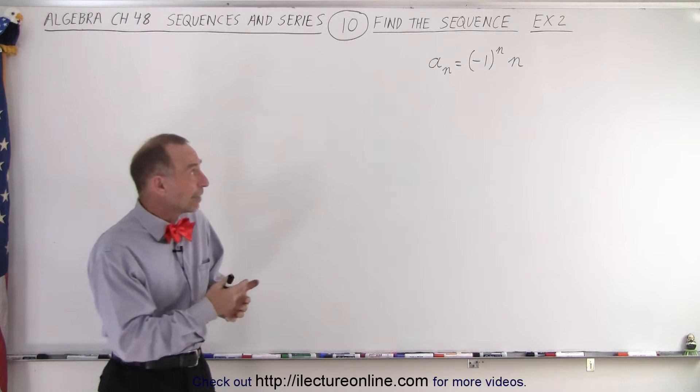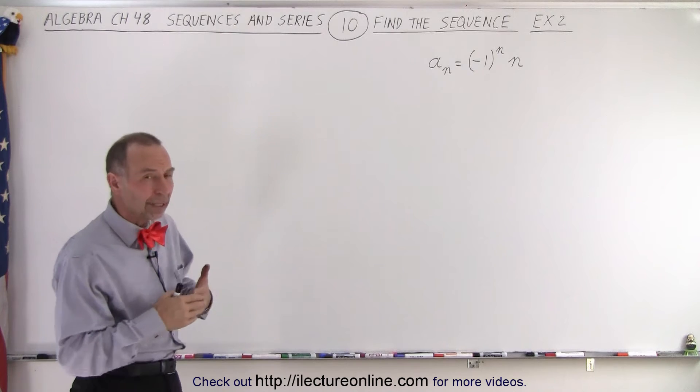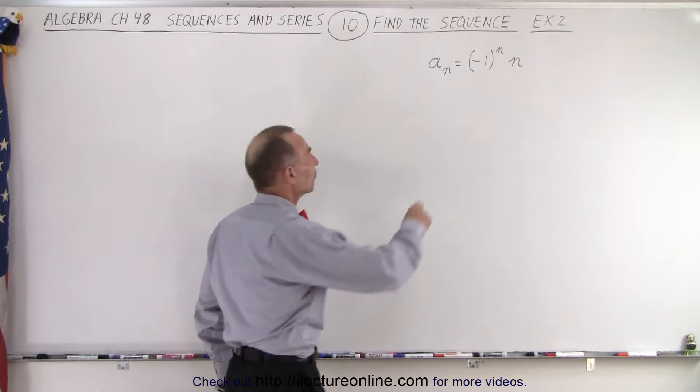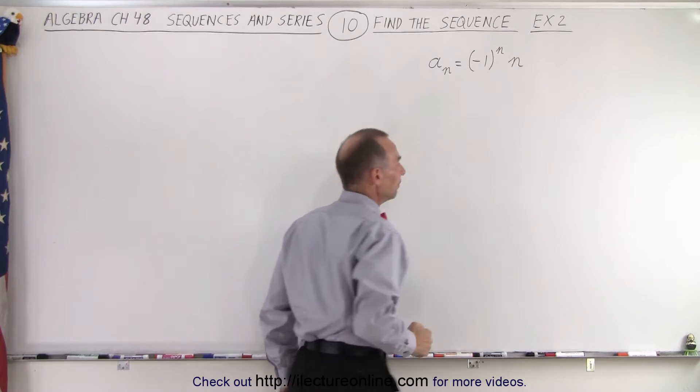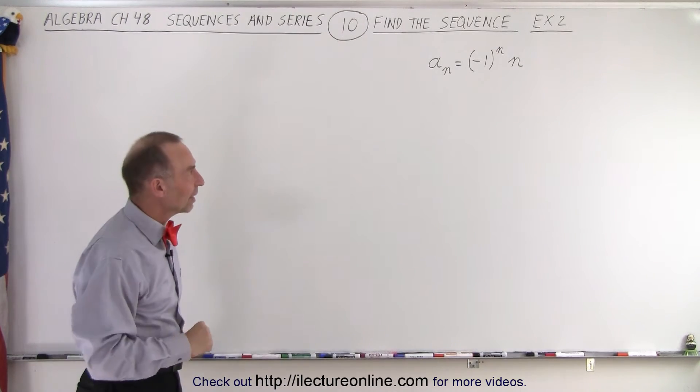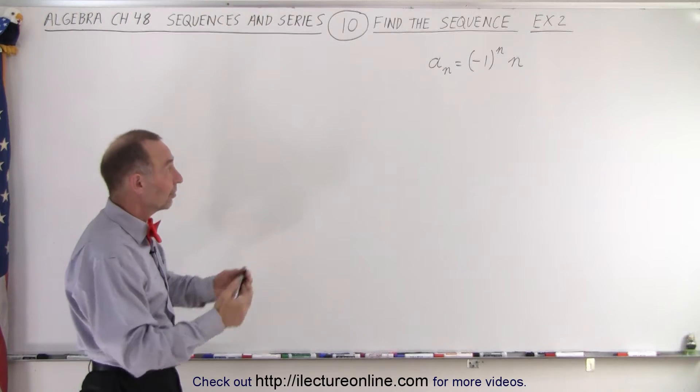We have the number negative one raised to the n power. What that will do is give us alternating signs in the sequence, so that's why this example is here. We can see how that's done.